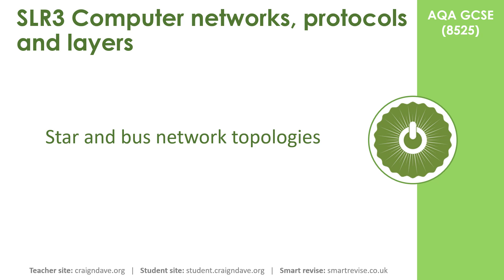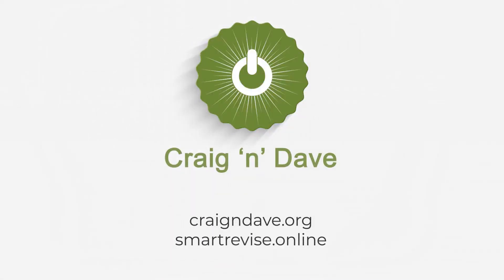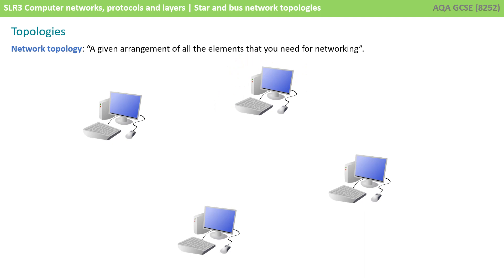In this video we take a look at the star and bus network topologies. The topology of a network is simply the arrangement of all the elements that you need for networking. Here we've got four computers, and we could choose to arrange these in a number of ways.